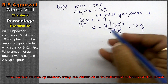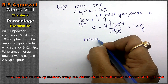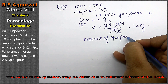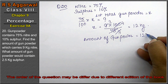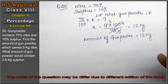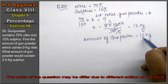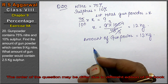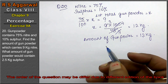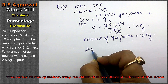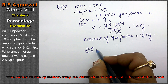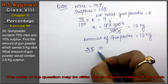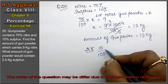Amount of gunpowder equals 12 kg. This means 12 kg of gunpowder contained 9 kg of nitrate. Now the question asks: what amount of gunpowder would contain 2.5 kg of sulfur? Sulfur ki percentage is 10%, so 10 upon 100 of total gunpowder equals 2.5 kg.